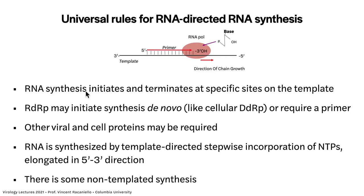Synthesis initiates and terminates at specific sites. Sometimes the polymerase initiates de novo, meaning it doesn't need a primer. Our cellular DNA-dependent RNA polymerase, which makes mRNAs, also doesn't need a primer. Sometimes RNA polymerases do require a primer. You also need other viral and cellular proteins to carry out this process. RNA is made by template-directed incorporation of NTPs. In some cases, however, there is non-templated synthesis — we're going to see an example of that today.